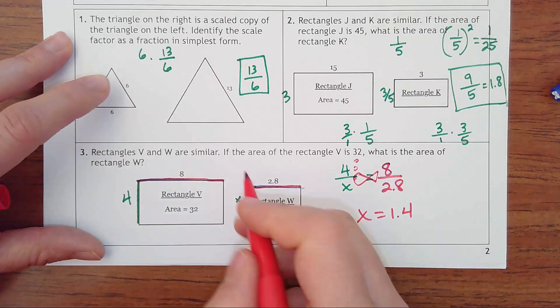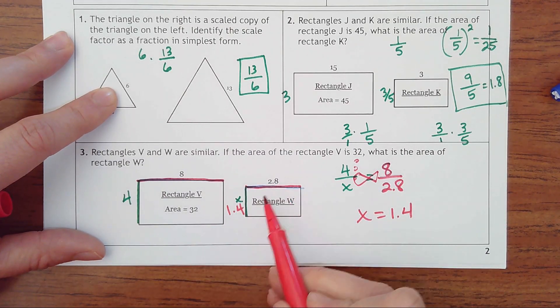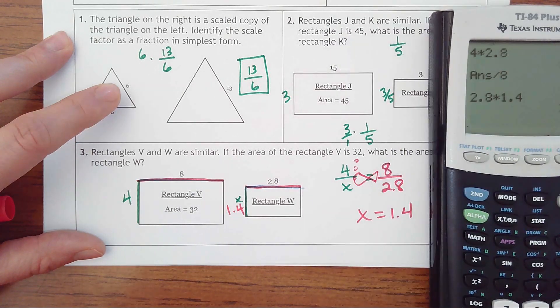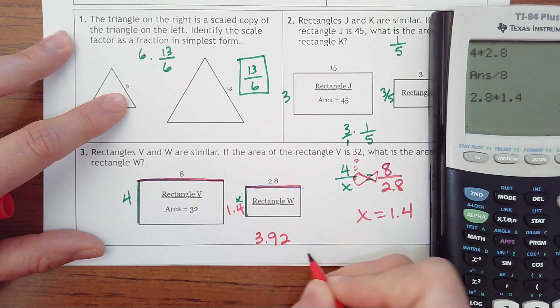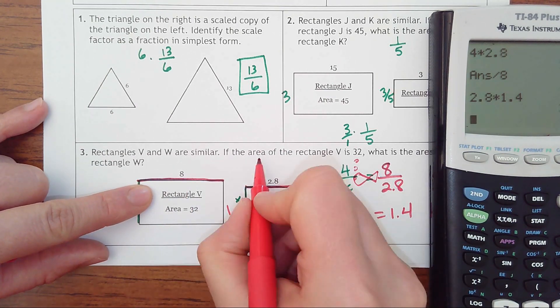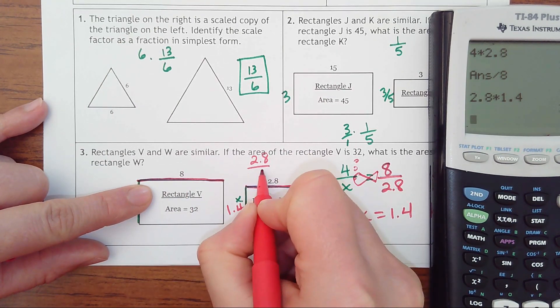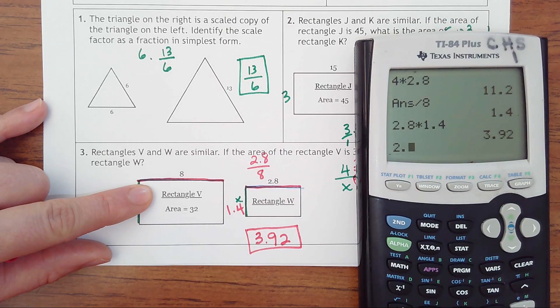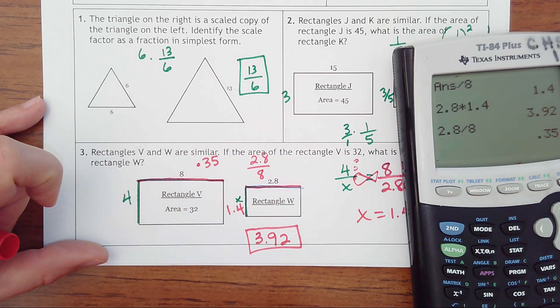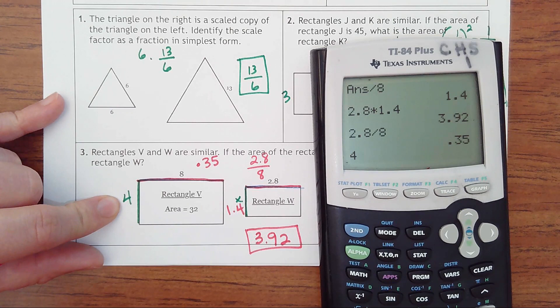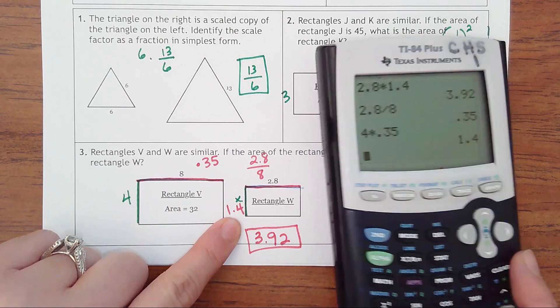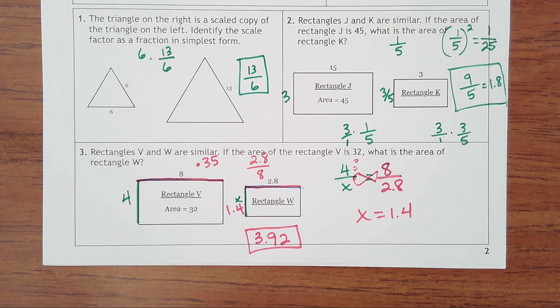And then once I have that dimension, I can simply take my length times my width. So 2.8 times 1.4 is 3.92 squared units. And the other way to go about that is you could have made a ratio and saying eight got multiplied by 2.8 out of eight, which I would probably divide that. So my scale factor is 0.35. So I could have taken four times that scale factor 0.35 and that one had gotten the side to be 1.4 and then go that route as well. So there's several different ways to get these answers.